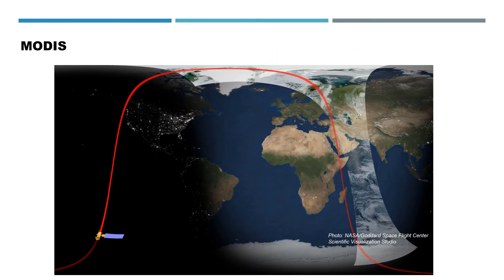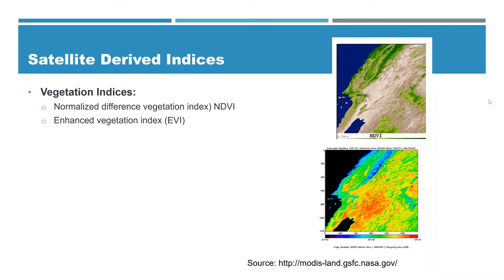That's how MODIS captures an image of the entire planet. There are different products we get from the MODIS instrument, especially for water resources. The first is vegetation indices — specifically the Normalized Difference Vegetation Index (NDVI), which is a popular one, and the Enhanced Vegetation Index (EVI). These indices help us monitor the health of vegetation.